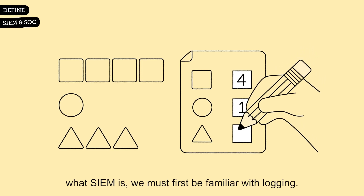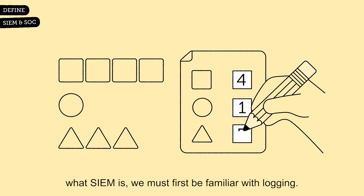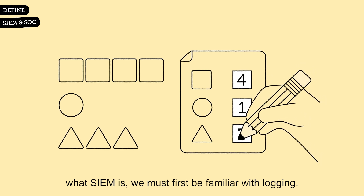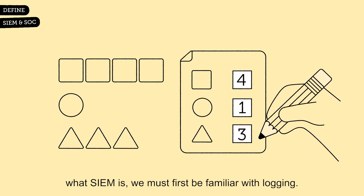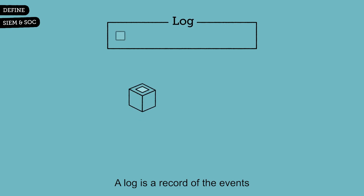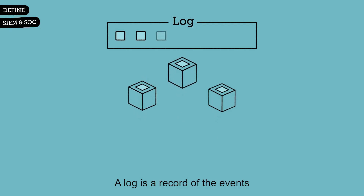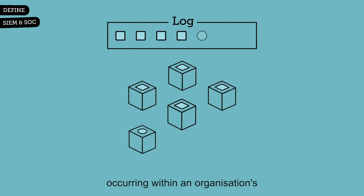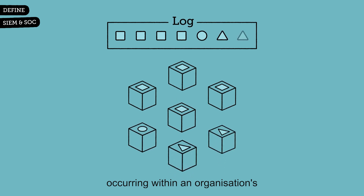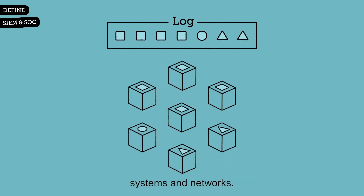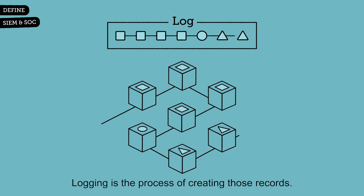To understand what SIEM is, we must first be familiar with logging. A log is a record of the events occurring within an organization's systems and networks. Logging is the process of creating those records.